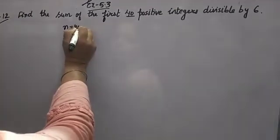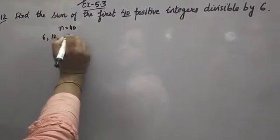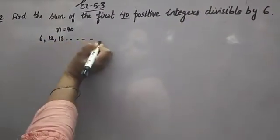So, I am talking about 40 terms divisible by 6: 6 times 1 is 6, 6 times 2 is 12, 6 times 3 is 18, and so on up to 40 terms.